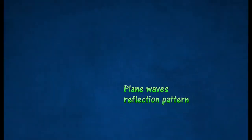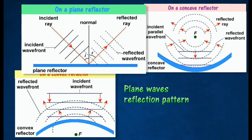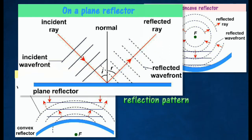Plane waves reflection pattern. Plane wave incident on a plane reflector: the waves are reflected as plane waves. It obeys the laws of reflection, where the angle of reflection equals the angle of incidence.